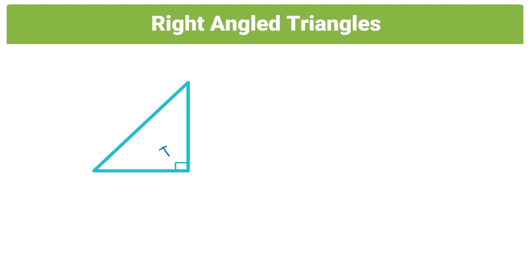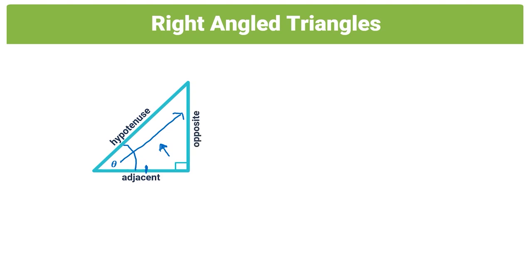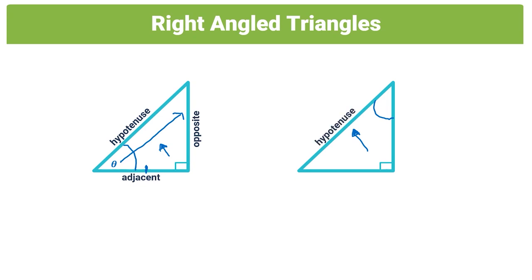The side opposite the right angle is always the hypotenuse. If we consider one angle, the side next to that angle is the adjacent side, and the side directly across from it is the opposite side. However, if we consider the other non-right angle, the adjacent and opposite sides swap accordingly — the hypotenuse remains the same since it's always opposite the right angle.